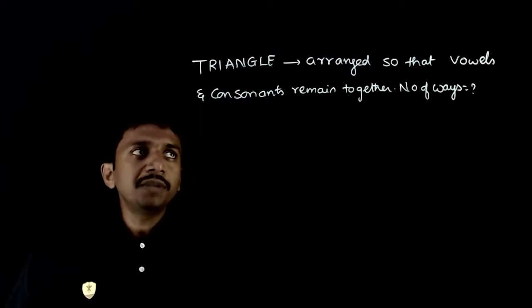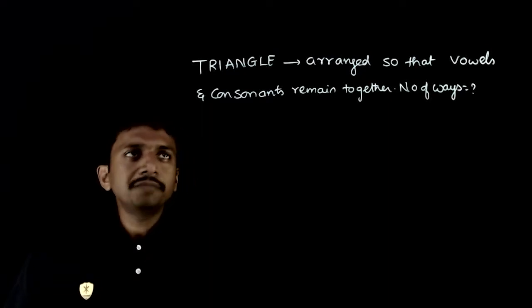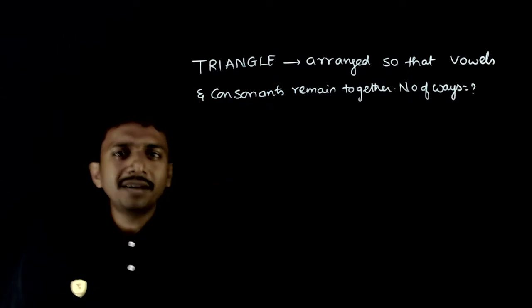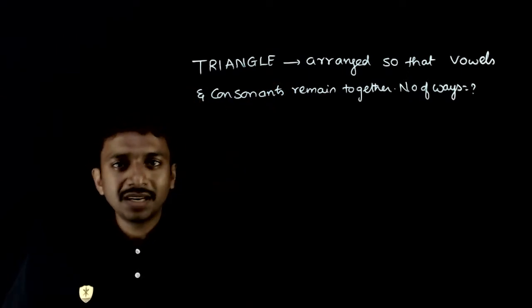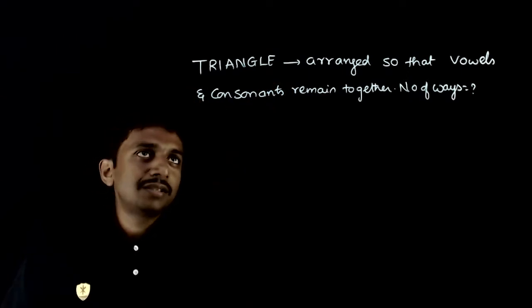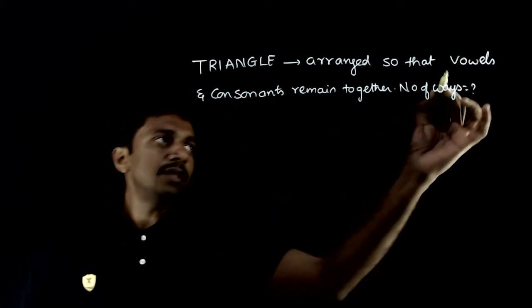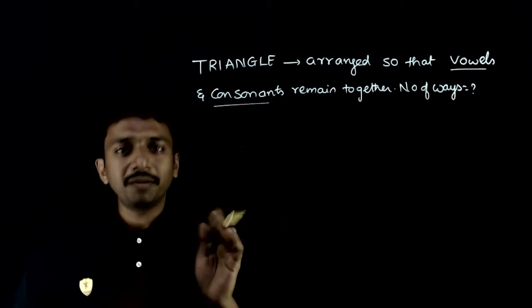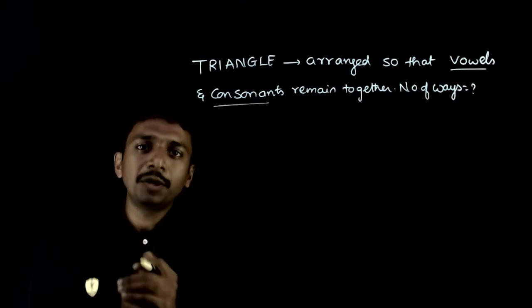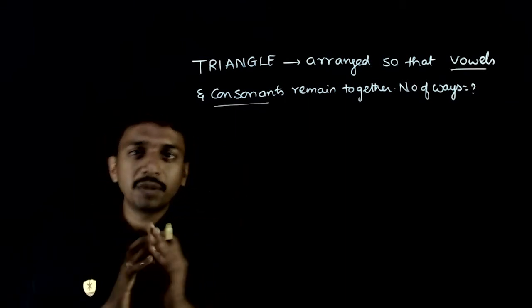Hello students, this question is about the word triangle. We have to arrange triangle in such a way that the vowels and consonants remain together. So we should have vowels together and consonants together.